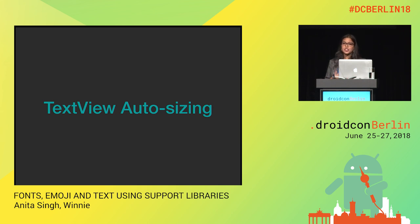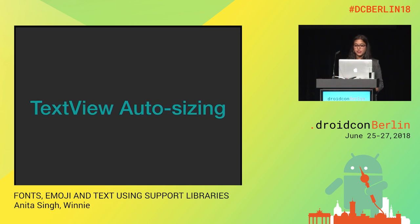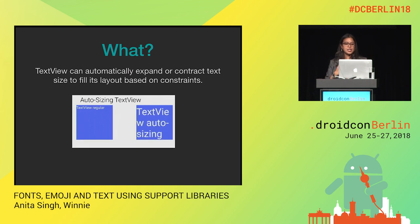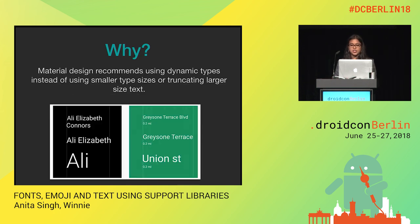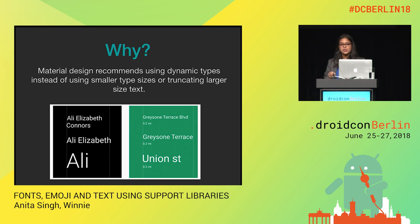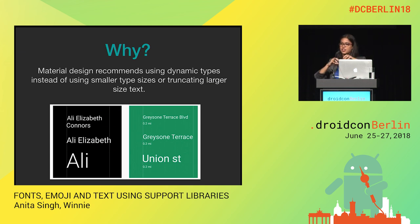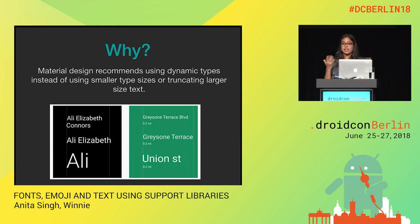This last topic — TextView autosizing — was also introduced with Support Library 26 and above. It essentially allows TextViews to expand or contract dynamically based on its bounds. Material Design has since forever recommended using dynamic text types over truncated text or compromising on text size. The shorter the text, the bigger it is and the more readable; the longer the text, it autosizes to fit in. This way you don't have to truncate text or pick a middle-ground text size — it can just autosize and do the best it can.